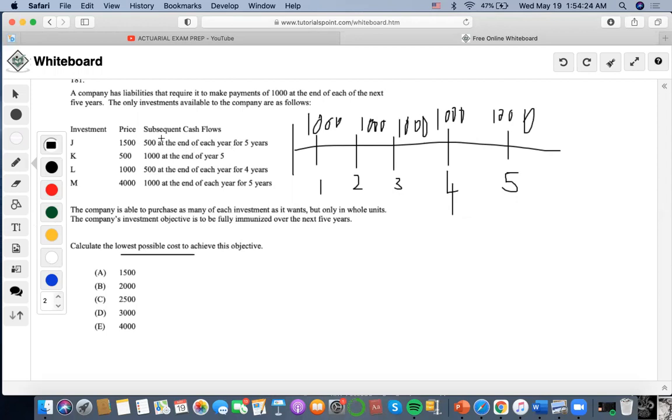This is only 500 at the end of each year for five years, so we would have to pay for two of these investments to make that happen for a thousand each year. That would be 2J, which would be two times 1500, which would be worth 3,000.